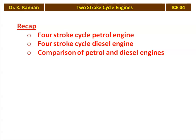We recap from the previous lecture. In the previous 3 lectures, we studied about the 4-stroke cycle petrol engine, 4-stroke cycle diesel engine, the working of the petrol engine, the valve timing diagram, PV diagram, actual PV diagram, theoretical PV diagram, actual valve timing diagram, theoretical valve timing diagram. We also compared the petrol engine and the diesel engine.